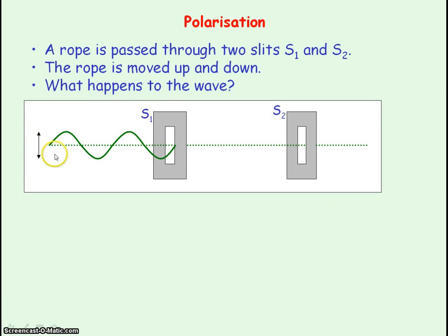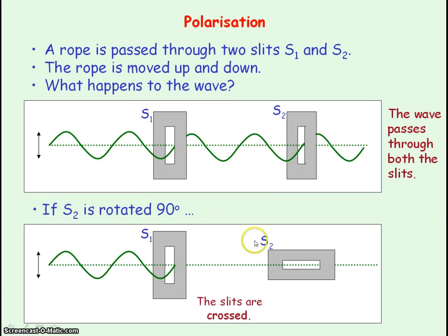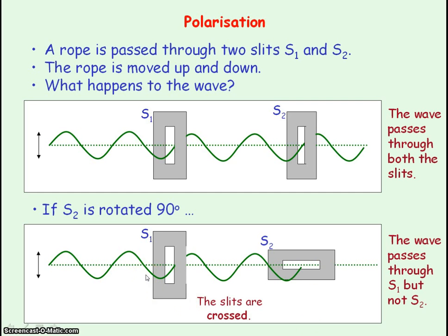What will happen to this wave at S1 and S2? The wave will pass through S1 and S2. Now, if we rotate S2 so it is 90 degrees relative to S1 — so the slits are crossed, perpendicular to each other — what will happen? The wave will pass through S1, but it will not be able to pass through S2.